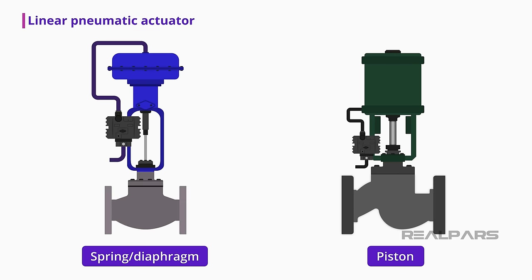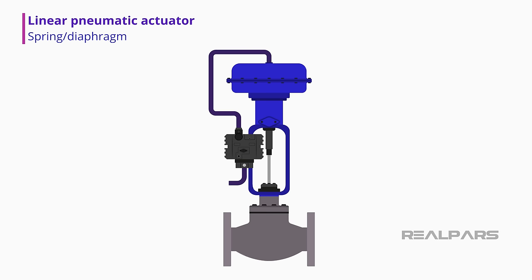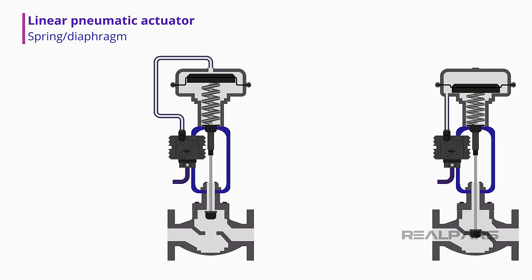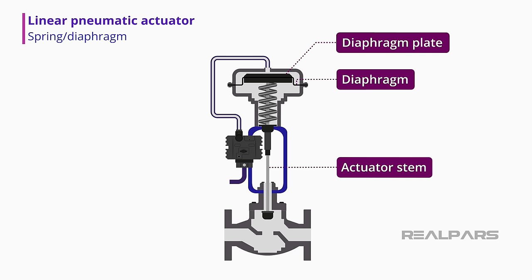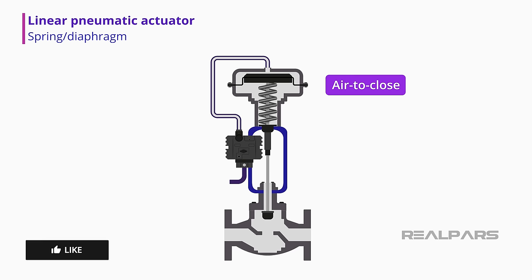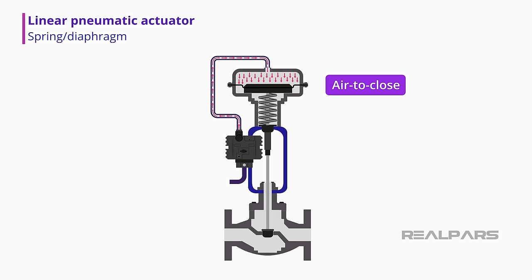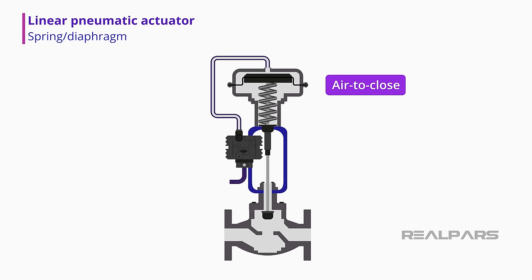The spring diaphragm pneumatic actuator is probably the most common actuator used to operate industrial process control valves. It consists of a diaphragm and plate that are connected to an actuator stem. A flexible diaphragm is enclosed in a pressure-tight housing. Pneumatic pressure enters this housing, applying pressure to the diaphragm. As the air pressure increases, the force exerted against the spring increases, causing the actuator stem to move. Reducing the pneumatic pressure will cause the spring to retract the diaphragm, and the actuator stem will move a valve in or out of a valve body.